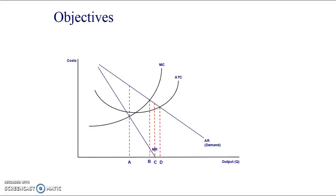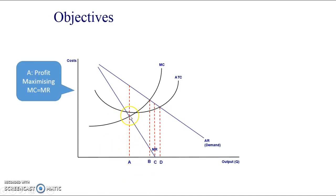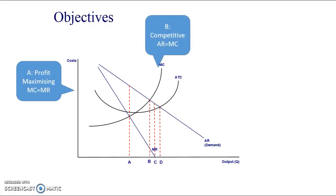We're looking at the different objectives that firms might have, and the phrase 'divorce of ownership from control.' We'll use a monopoly diagram to analyze this. The profit-maximizing output is at point A, where marginal cost intersects marginal revenue, and the price is set accordingly. There are also other objectives the firm might pursue.